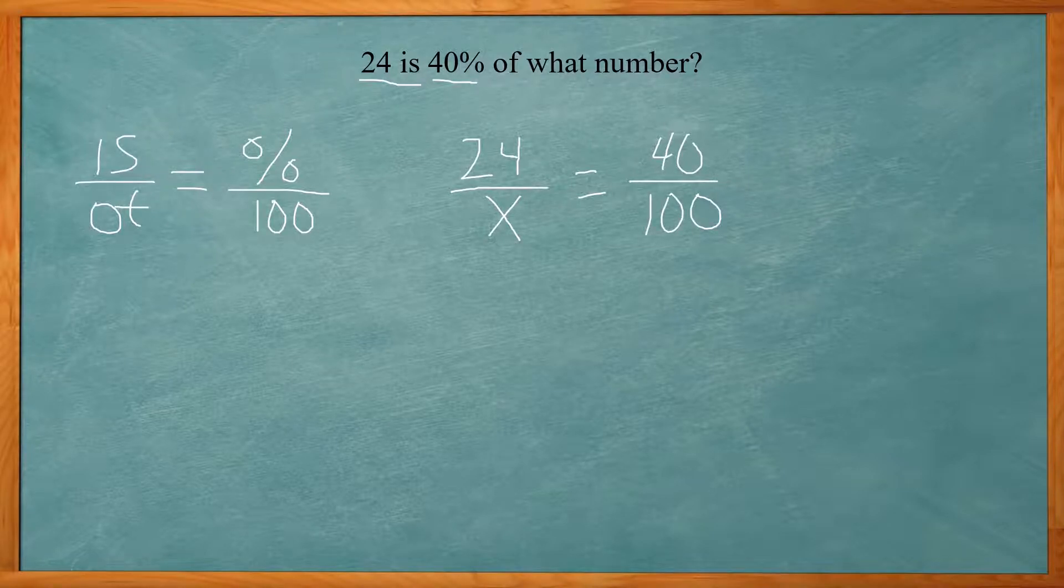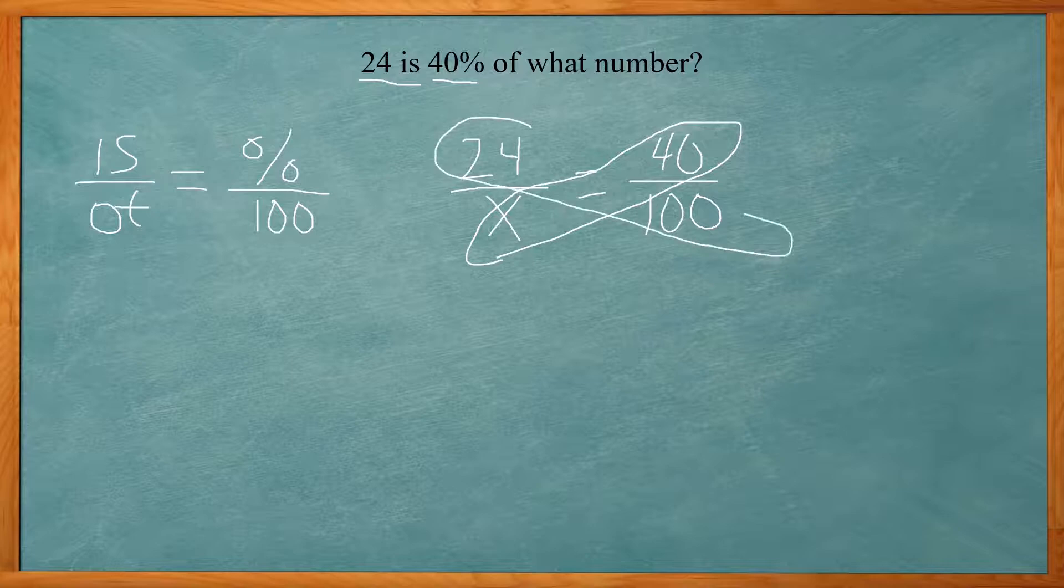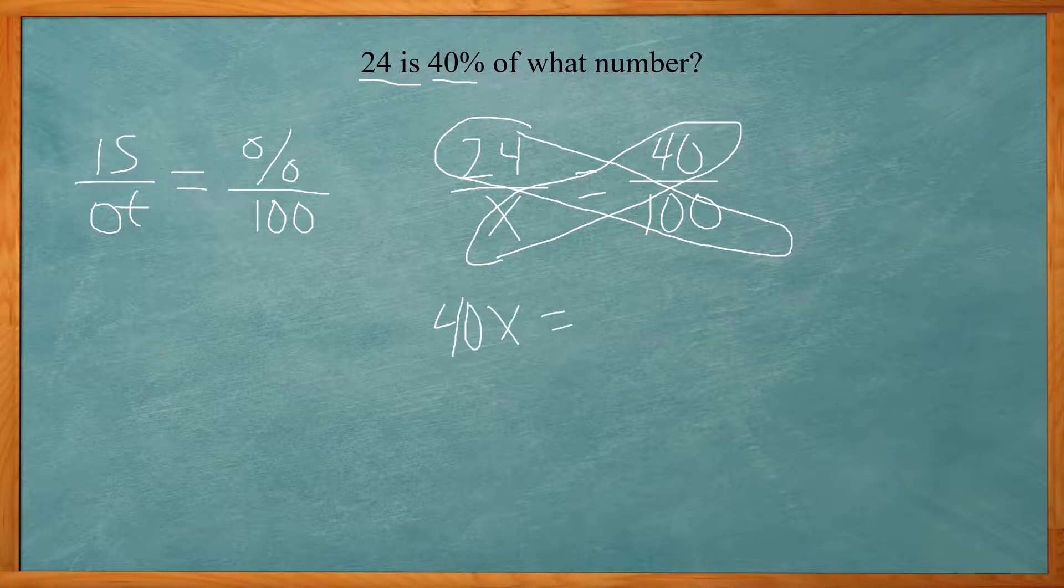Now we're going to solve this by doing cross multiplication. So that means it's going to be X times 40 is equal to 24 times 100. So X times 40 or 40X. 24 times 100.